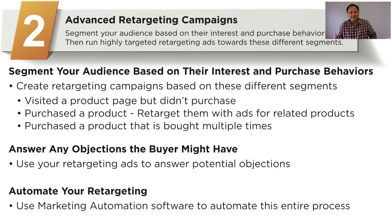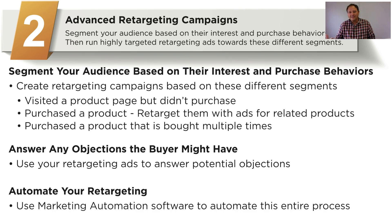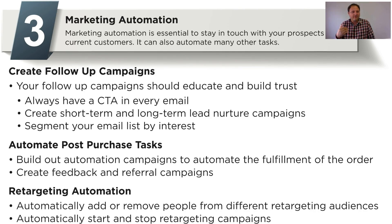You should answer any objections that the buyer might have. If they visited a product page but didn't purchase, think about what objections they might have — what made them not buy — and retarget them to help answer those objections, or retarget them with reviews from customers who purchased the product. This will help build authority and make their buying decision easier. Automate your retargeting: using marketing automation software can automate this entire process, which is super important. Otherwise you won't have enough time to put these strategies in place — which leads us into number three, marketing automation.